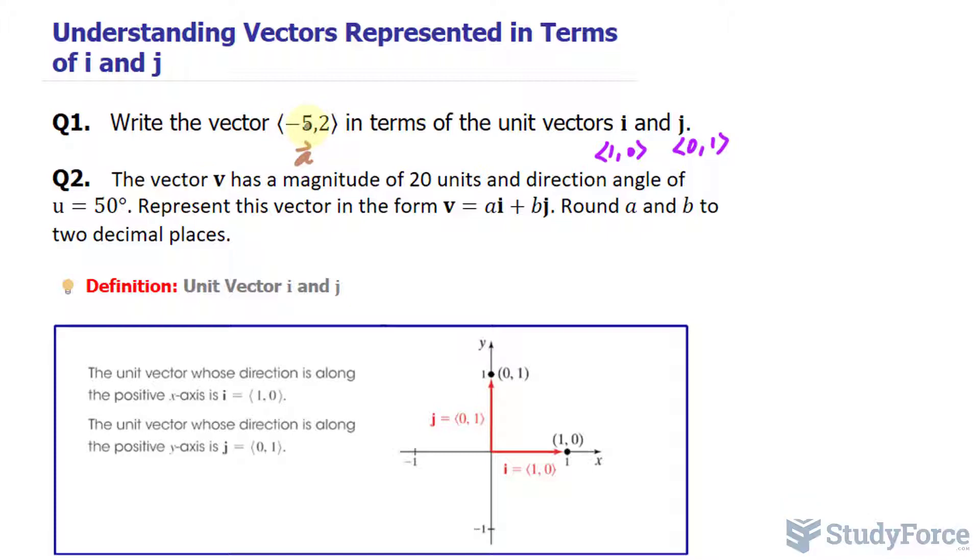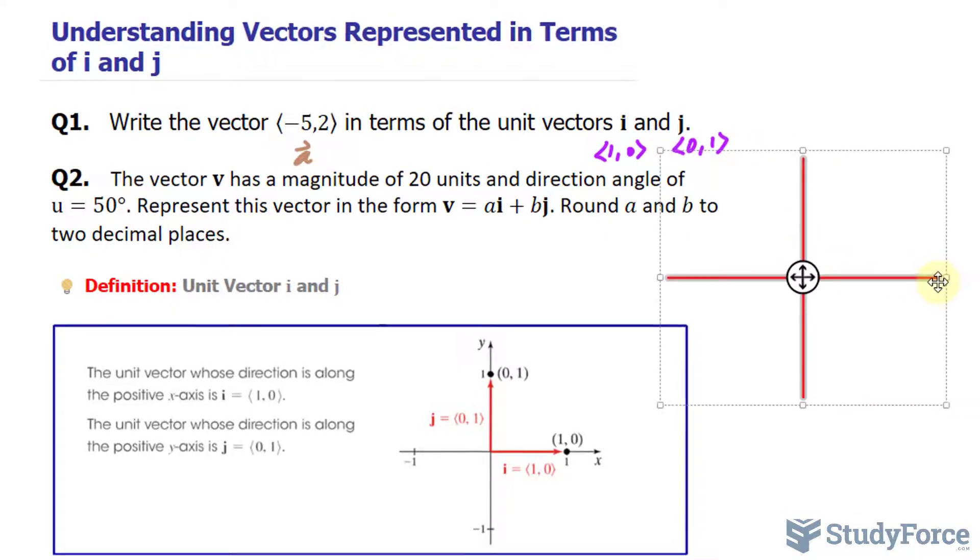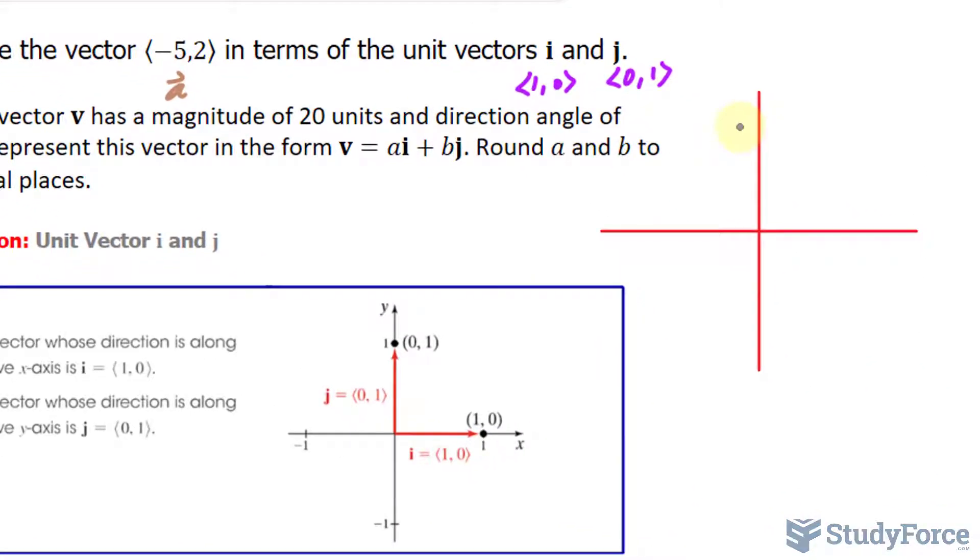So now that I've labeled our vector as a, I want to plot it on an xy plane. If we plot it on an xy plane, it will be somewhere in the second quadrant, specifically at the coordinates (-5,2).